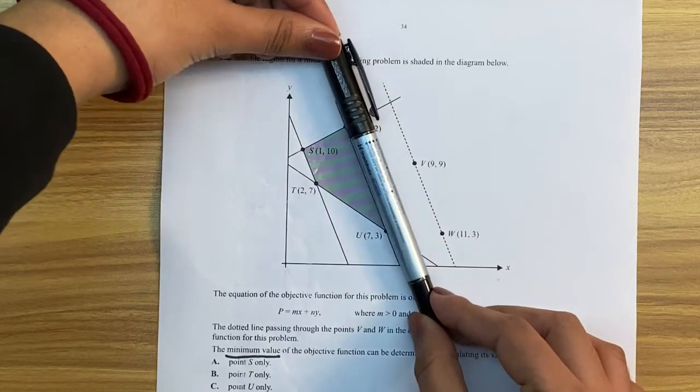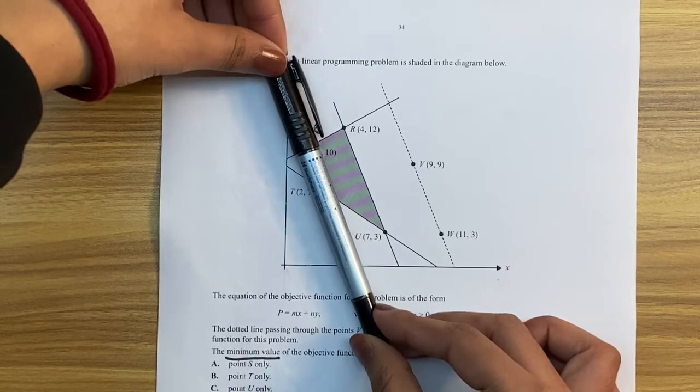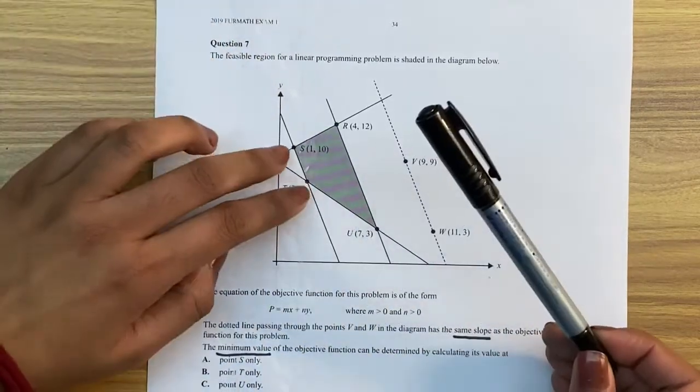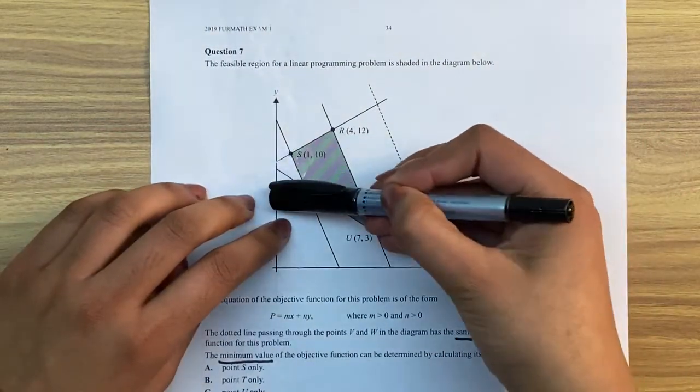So if I slide down this way, I see that this line is actually parallel to these two lines, and the last points that I pass are both of these two at the same time. So what that means is our answer has to be s and t.